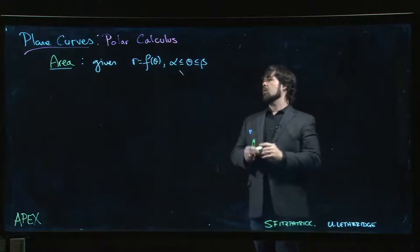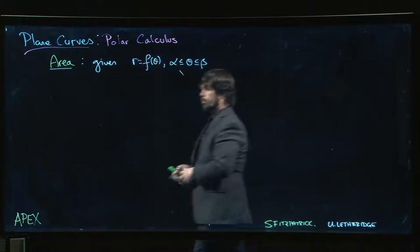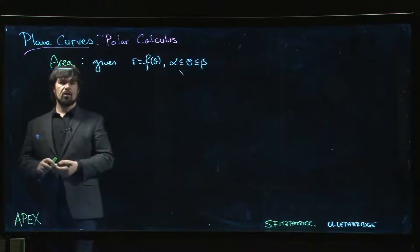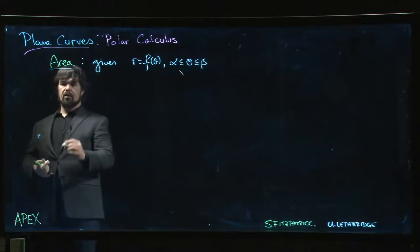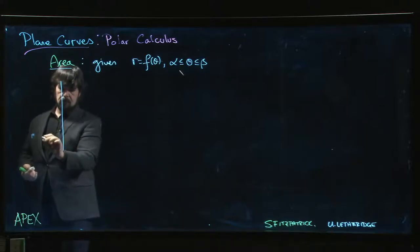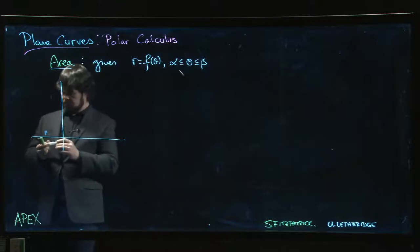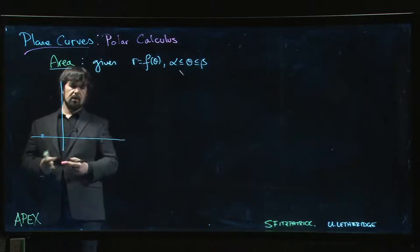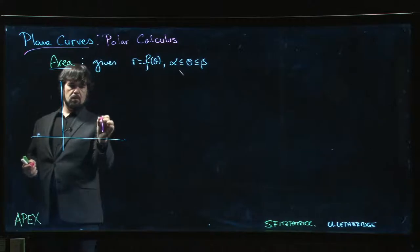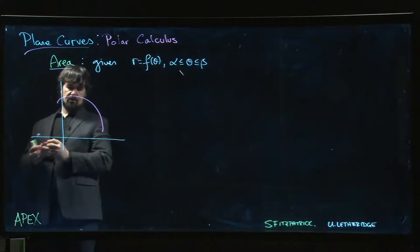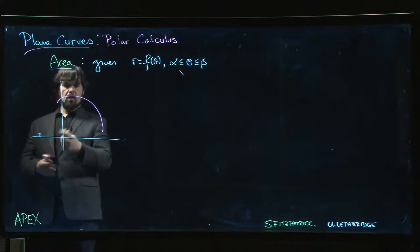We want to calculate the area. There are two ways that you can do this. Imagine we've got this piece of polar curve, so we have something like this for example.